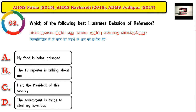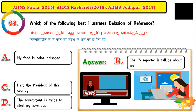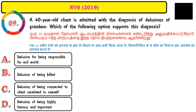Question number eight involves delusion of reference — the example given is: 'The TV reporter is talking about me.' Whatever situation involves a person believing they are being referred to by someone else is considered delusion of reference.